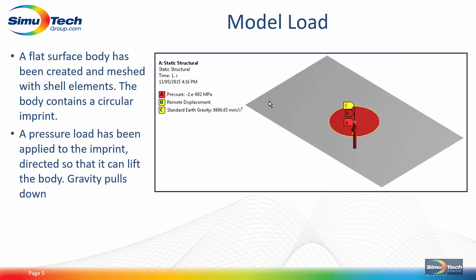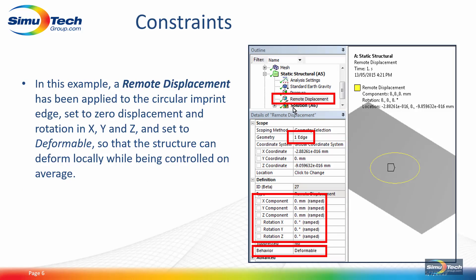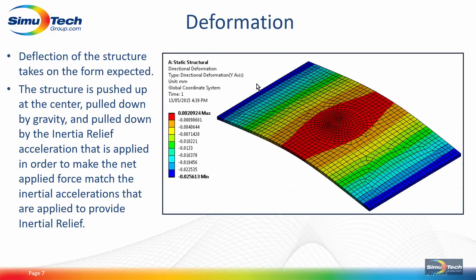Here's a flat surface body meshed with shell elements. There's a circular imprint with pressure loads applied. The net force is greater than the weight under 1g. We have put a remote displacement in this model, based on a point at the center of the circle, applied to the edge. All we want it to do is prevent this thing from moving around freely in three dimensions, so the remote point is constrained in all six translations and rotations. The perimeter's behavior — the edge — is set to deformable, because with the plate accelerating upward, it will curve, so we do not want the behavior to be rigid.